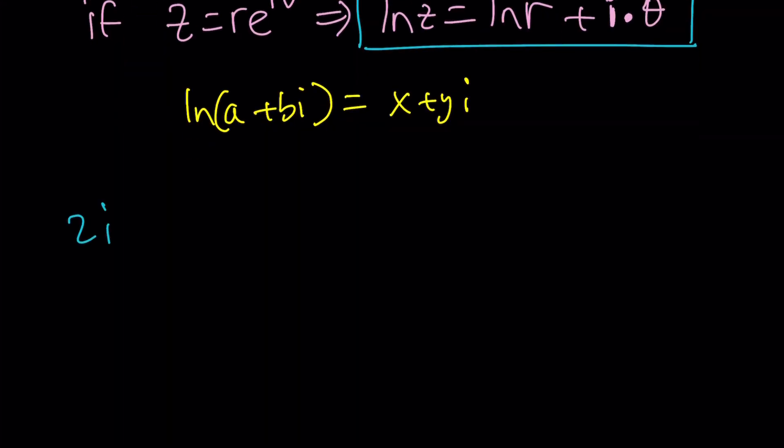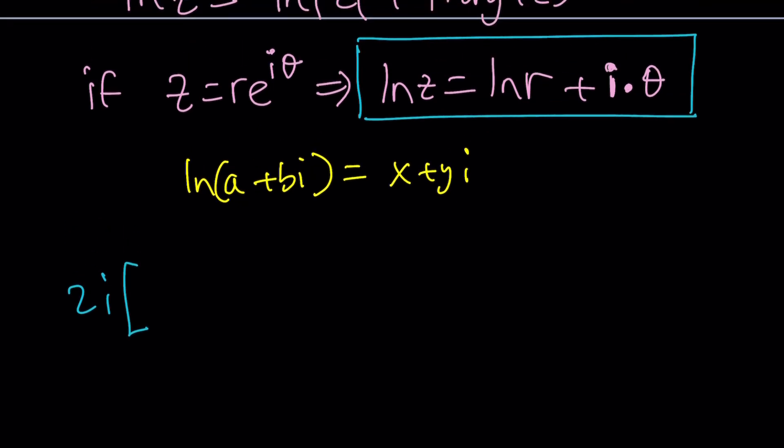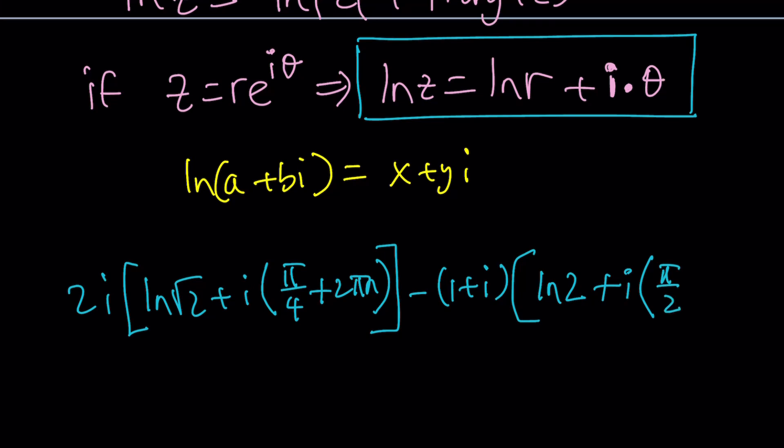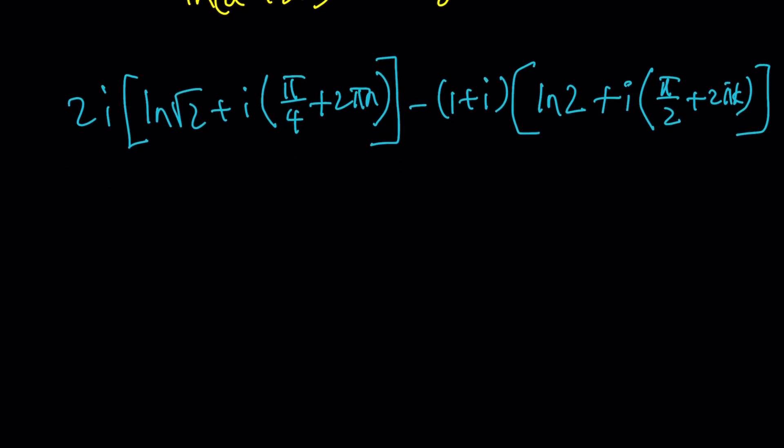2i multiplied by, now I'm going to replace this with ln r plus i theta. So that's ln square root of 2 plus i times pi over 4. But I'm not going to settle for the principal value. I'm going to also add multiples of 2 pi. And the other number, ln of 2i, is going to be ln 2 plus i times pi over 2. But again, I'm going to add 2 pi k to consider all possible solutions, which are infinitely many.